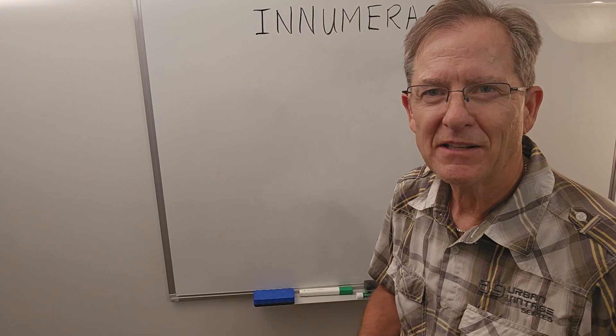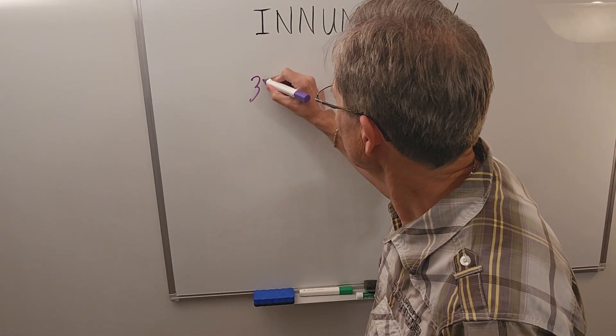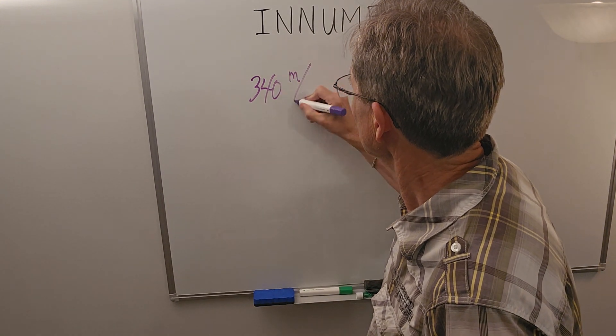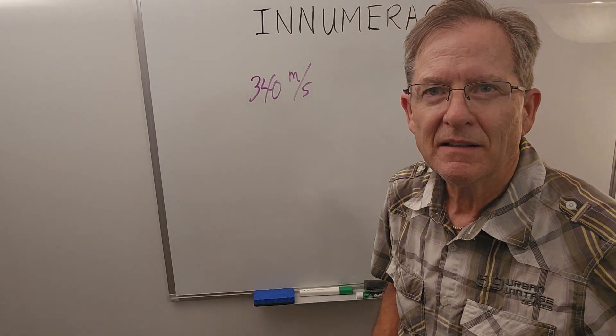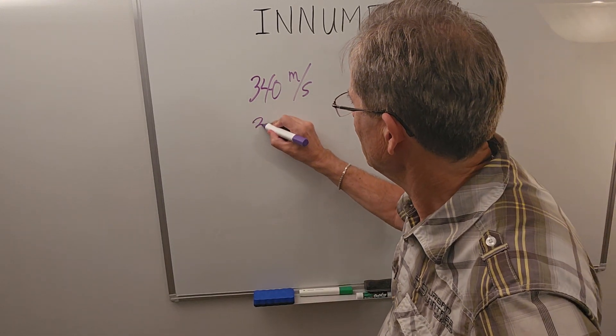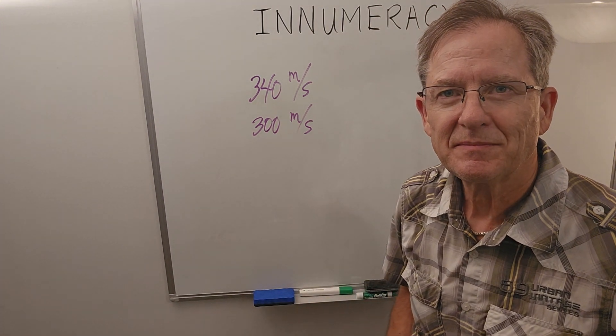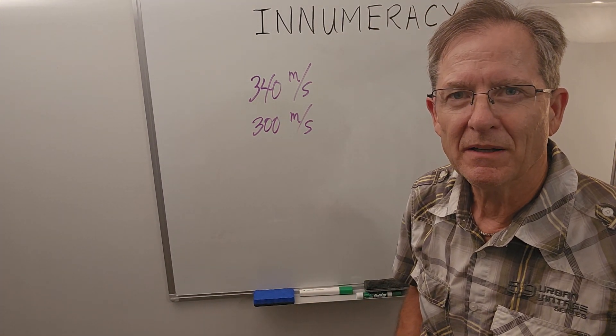Well, passenger jets do not exceed the speed of sound. The speed of sound is about 340 meters per second, depending on the temperature. So, let's say the speed of the passenger jet is about 300 meters per second. Just round it down a bit.